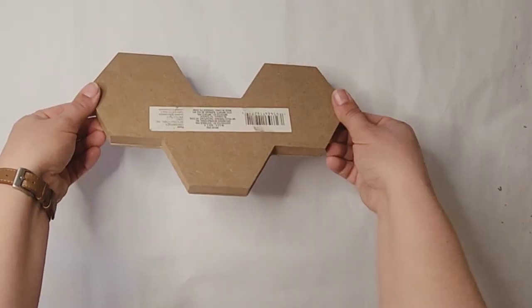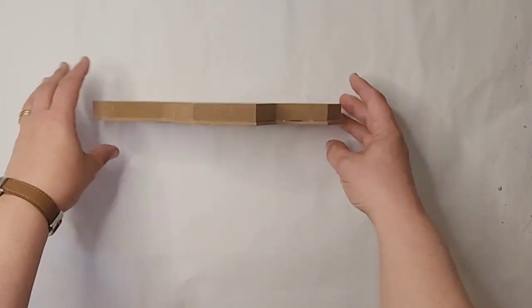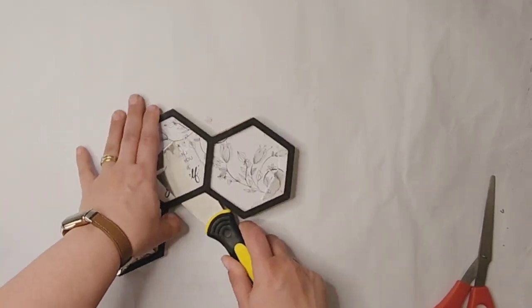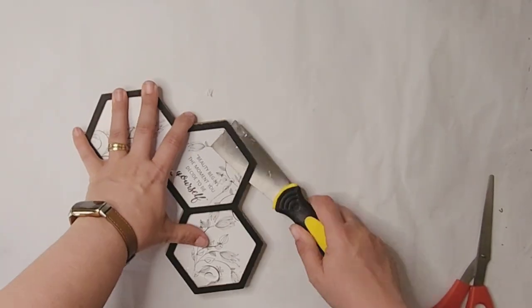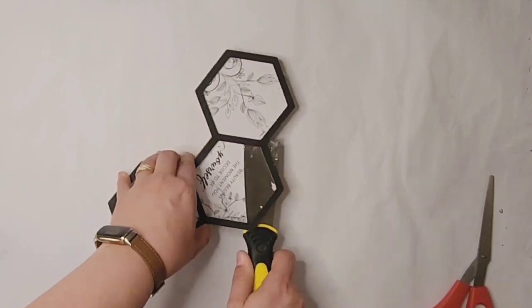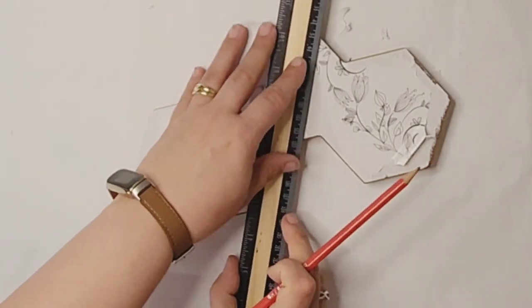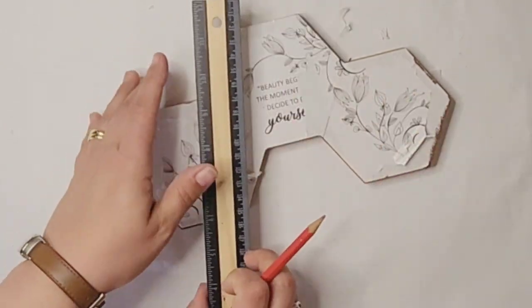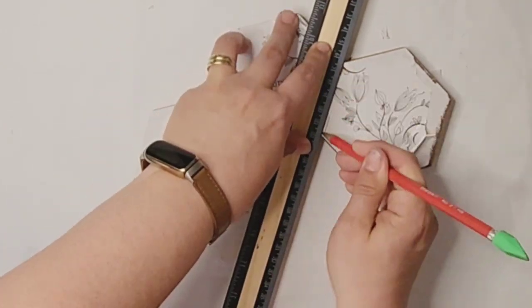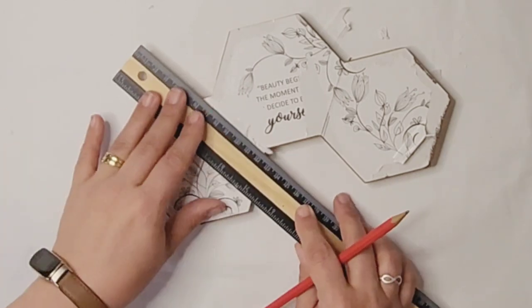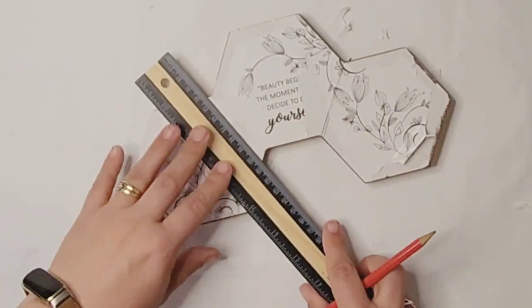Taking this octagon shaped home decor piece from Dollar Tree, I'm going to pull off this frame that has these honeycomb shapes to it and save that for another DIY later. Marking off where I want to cut these down with my jigsaw. I'm going to go ahead and go out and get them cut down.